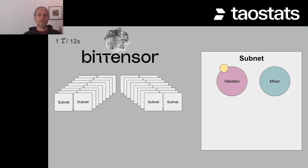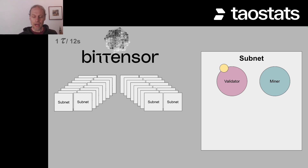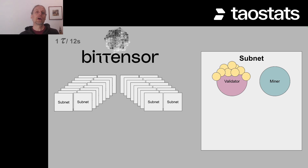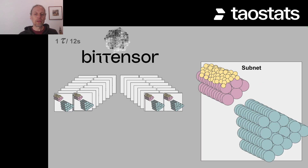Validators have people who have delegated TAU — who have staked TAU — to the validator, shown as a dot above them. There's not just one dot; there can be as many as thousands of delegates per validator. In each subnet there's not just one validator and not just one miner — there's generally a sum of 256 nodes, with a smaller number of validators and more miners.